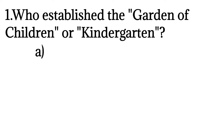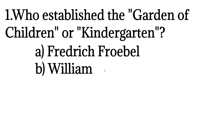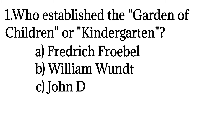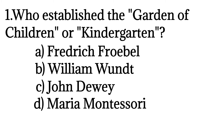Now let us see 10 MCQs based on pre-primary education. From these, some questions were repeatedly asked in TRB exams. The first question is: Who established the garden of children, or kindergarten? Options: Friedrich Froebel, William Mount John, B.V., Maria Montessori. The correct answer is Friedrich Froebel. Friedrich Froebel is also called the father of kindergarten.